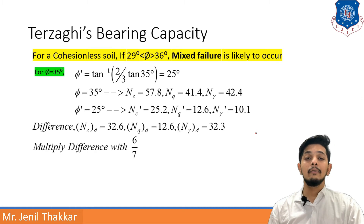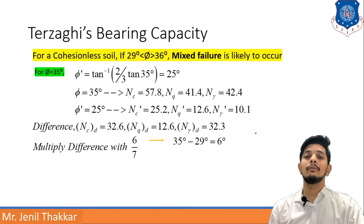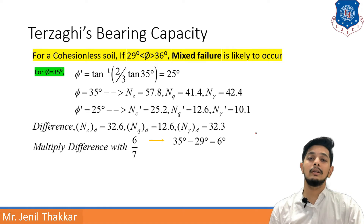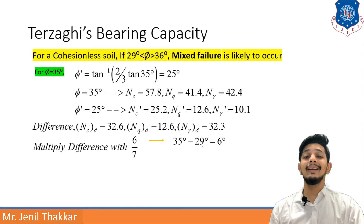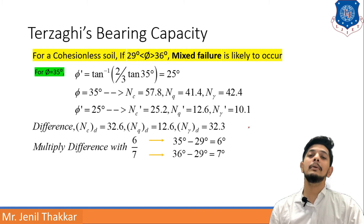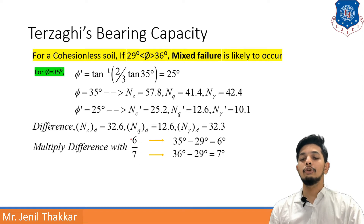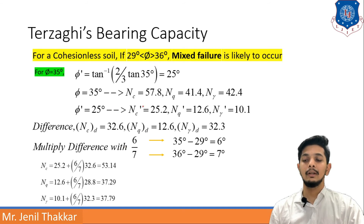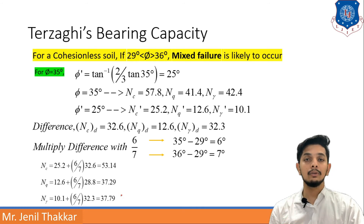We multiply these differences by 6/7. The reason: we are finding factors for φ = 35°. The gap above the lower bound (29°) is 6 degrees, and the total range is 36 − 29 = 7 degrees, so the fraction is 6/7. The denominator is always 7, and the numerator changes with the actual angle. We then add (6/7)×(difference) to the local shear factor values — N_C', N_Q', N_γ' — to obtain the final interpolated factors for this mixed case.